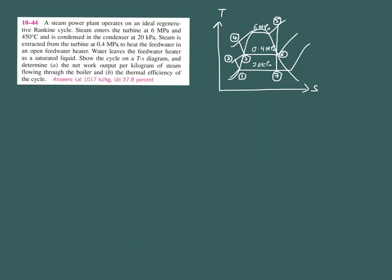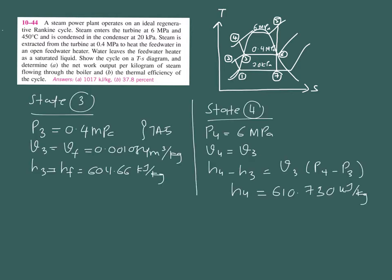Now you are going to solve for states 3 and 4. State 3 to 4, the device is actually a pump. The way you solve for 3 and 4 is about the same as how you solve for states 1 and 2 — you make use of the same steps. So you will obtain H3 equal to HF, and H4 obtained from the work pump relation.